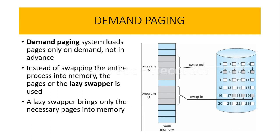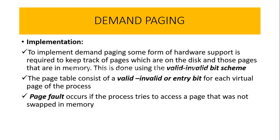To implement demand paging, we need special hardware support. This hardware keeps track of which pages are placed on the disk and which are in main memory. This tracking is done using a scheme called the valid-invalid bit scheme. We have a page table which uses this valid-invalid entry bit scheme. There is also the concept of a page fault, which occurs when a process tries to access a page that has not been swapped into main memory.